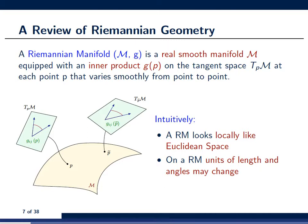The second part of the definition says that on each tangent plane of the manifold there needs to be a scalar product defined, and this scalar product must vary smoothly from point to point. Intuitively, this means that on a Riemannian manifold the units of length and angles may change as you move from point to point. As a consequence, if you want to determine the shortest path between two points on a manifold, it may no longer be a straight line but rather a curved path — something mathematicians call a geodesic.